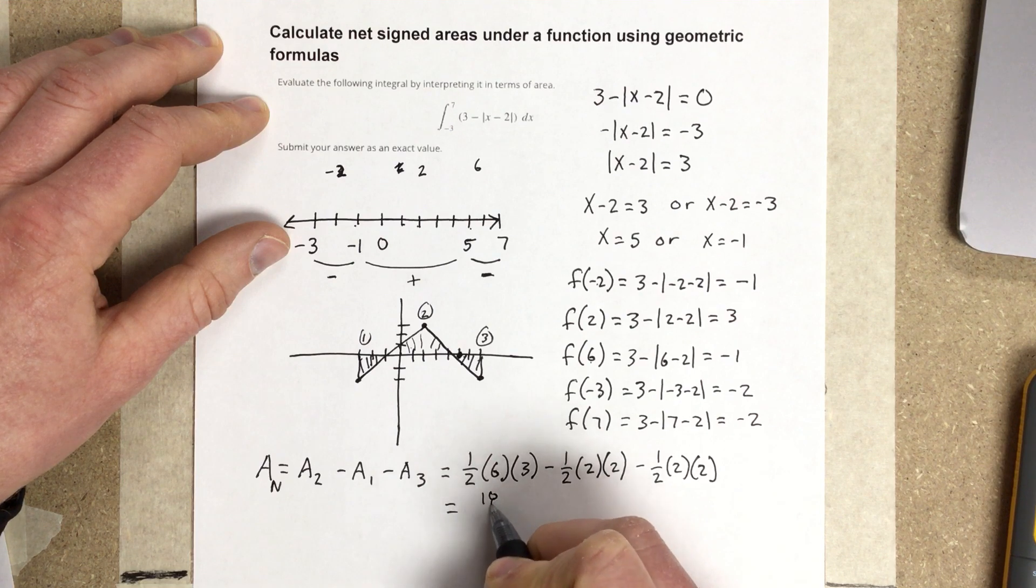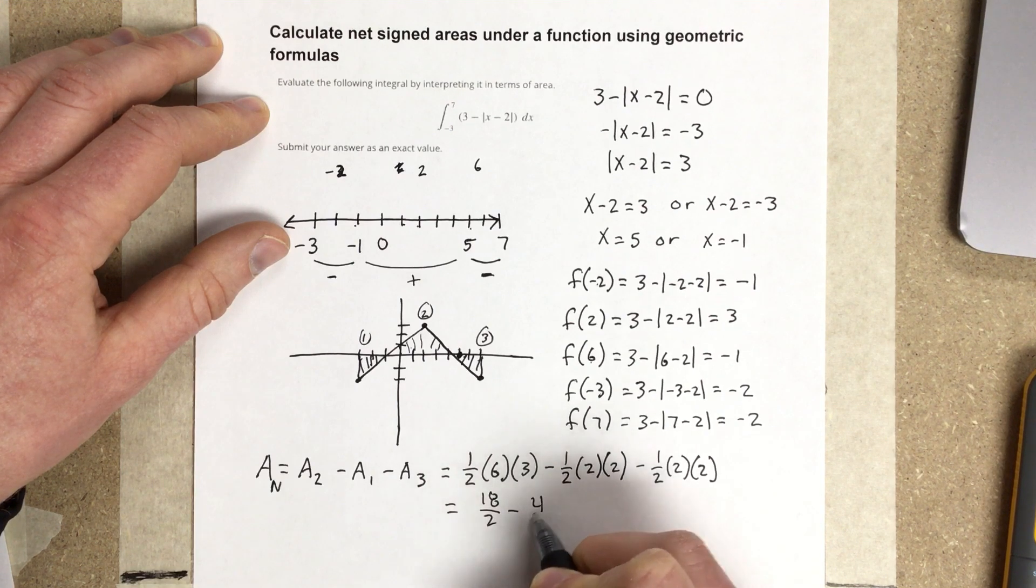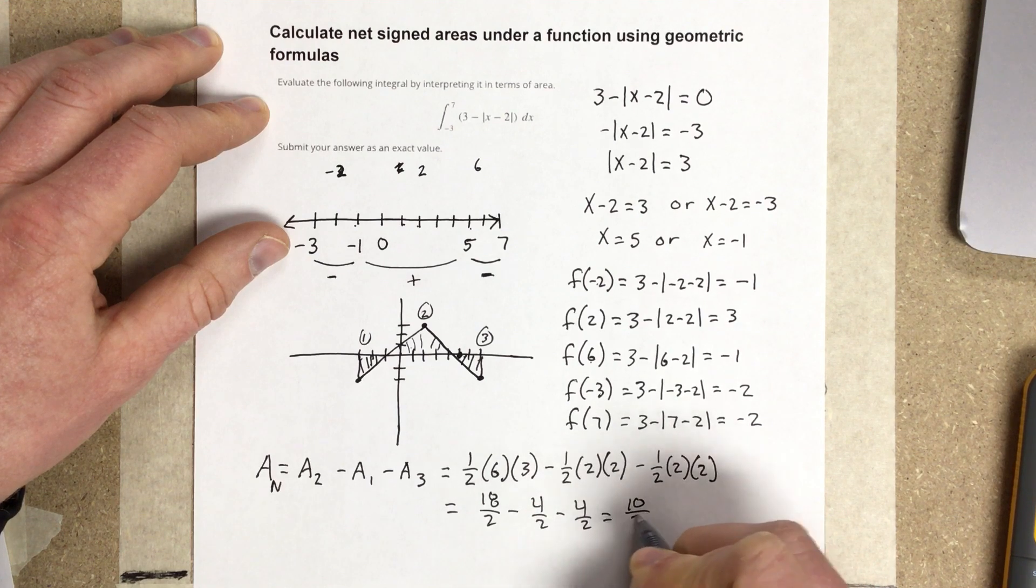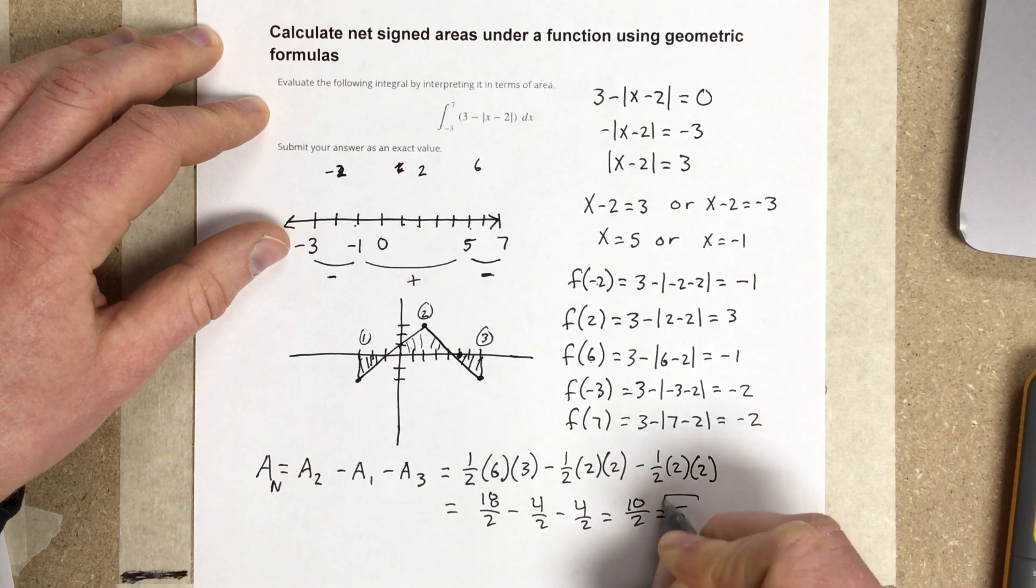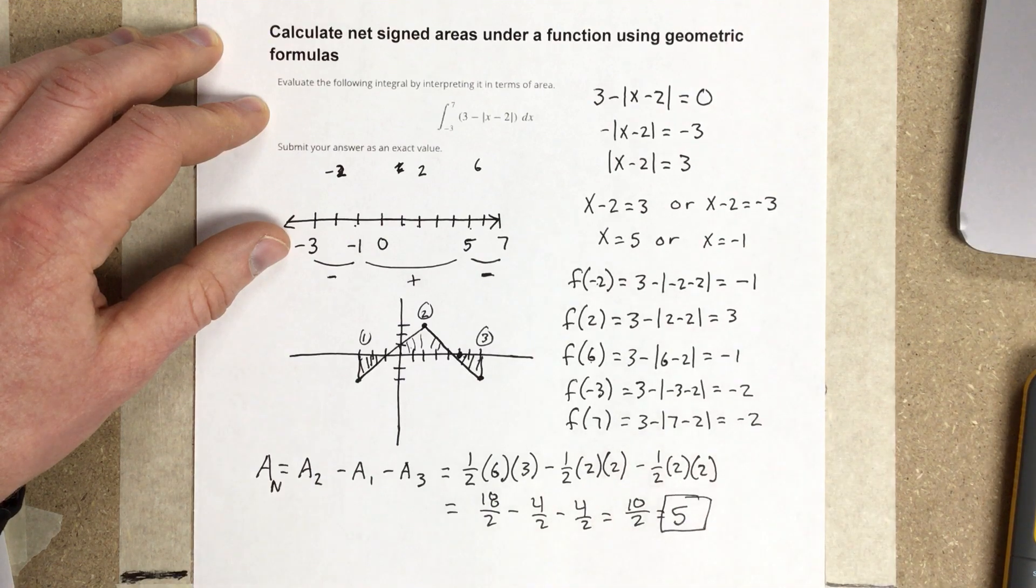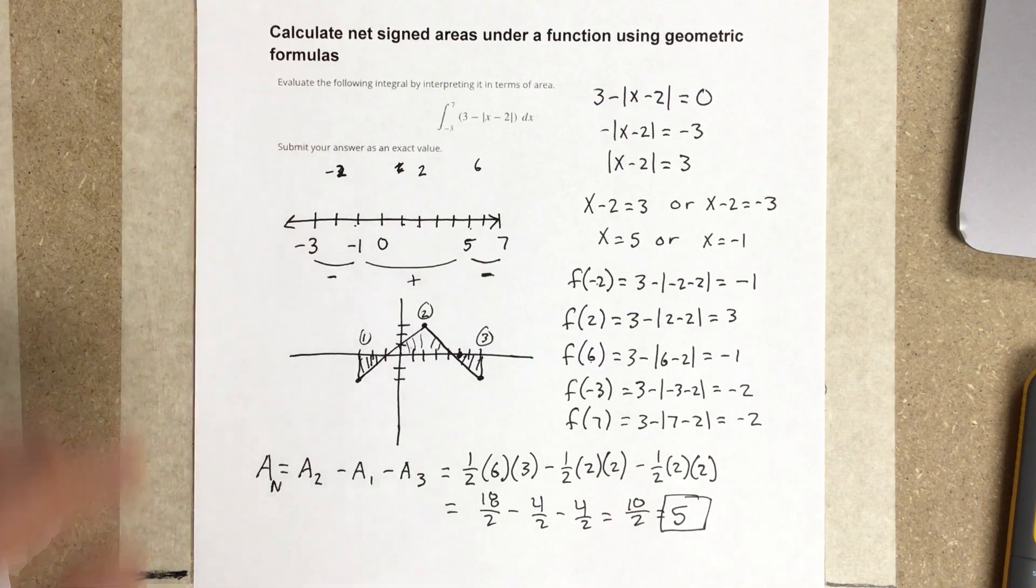So, I end up with 18 over 2, minus 4 over 2, minus 4 over 2, which is going to give you 10 over 2, which is 5. So, we get a net area of 5.